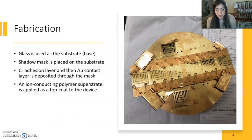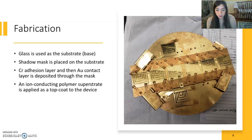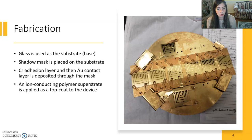The OECT is comprised of glass as the substrate, gold and chromium as the conducting plate, and an ion-conducting polymer superstrate as a top coat for the device. In this image you can see a batch of chips freshly plated with the shadow mask, which almost works as a stencil, still placed on top.